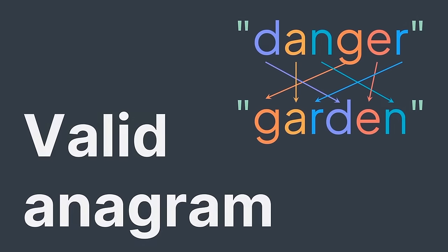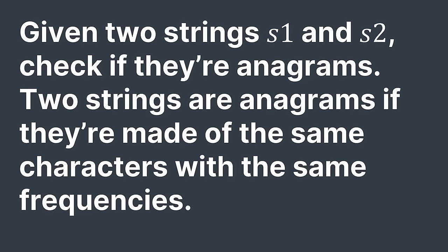Welcome to this video where we will solve the first problem of this course: valid anagram — a quite easy problem compared to the next ones. We are given two strings s1 and s2, and we are asked to check if they're anagrams. Two strings are anagrams if they're made of the same characters with the same frequency, just in a different order.